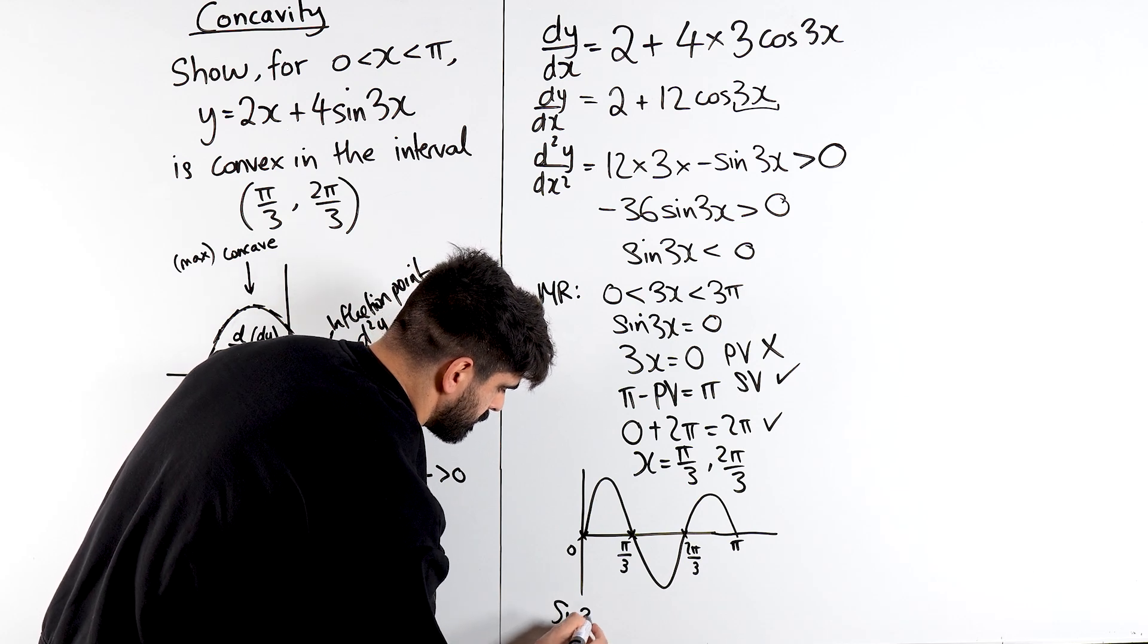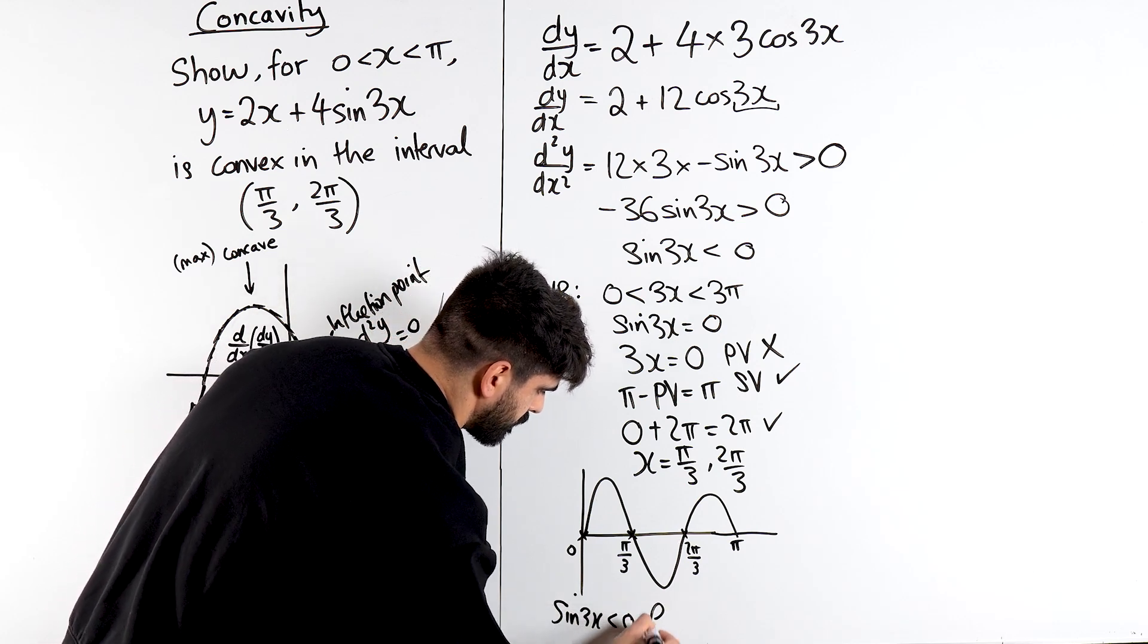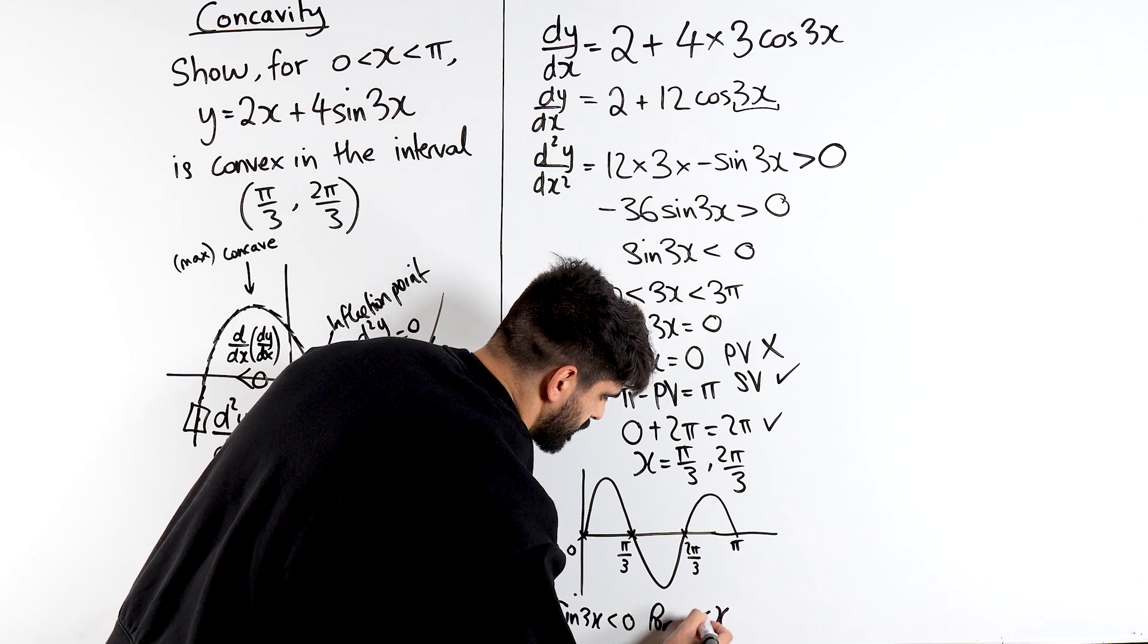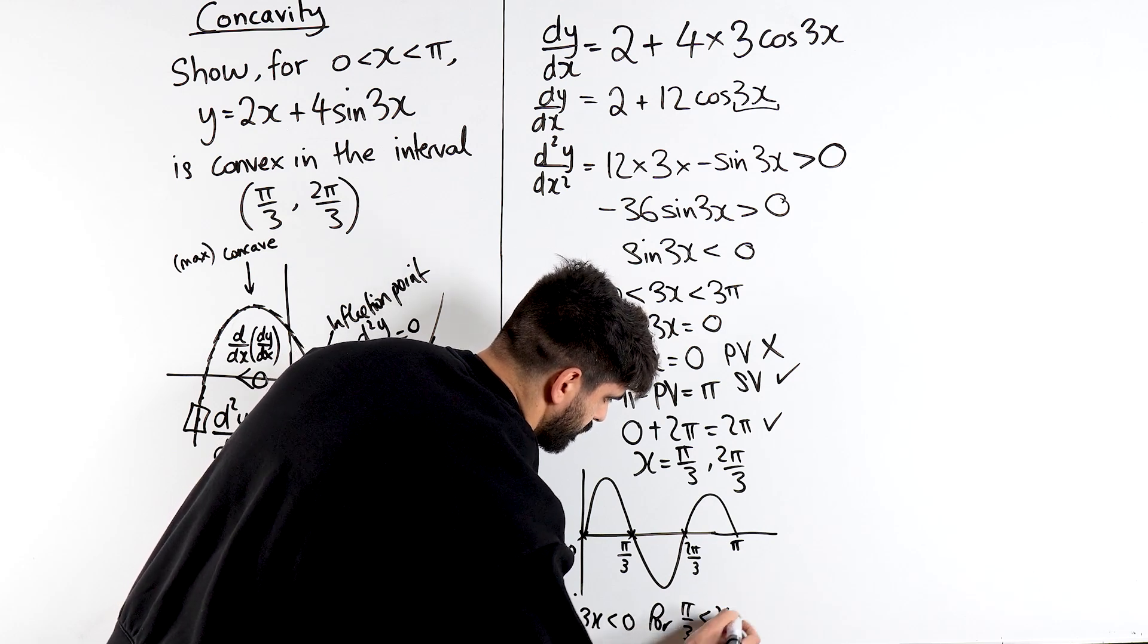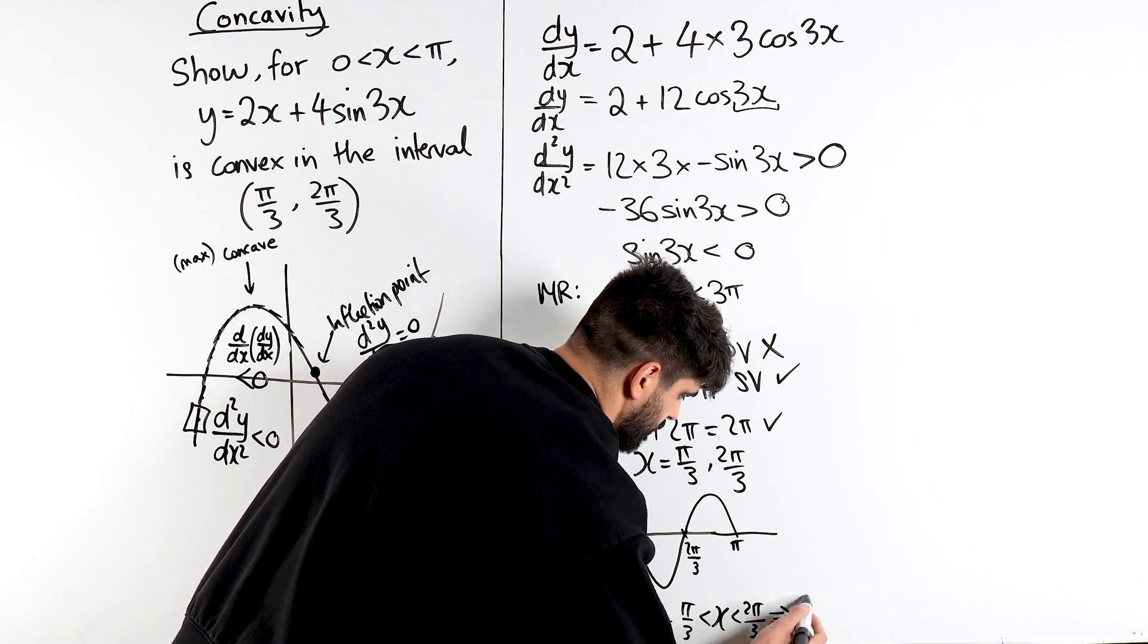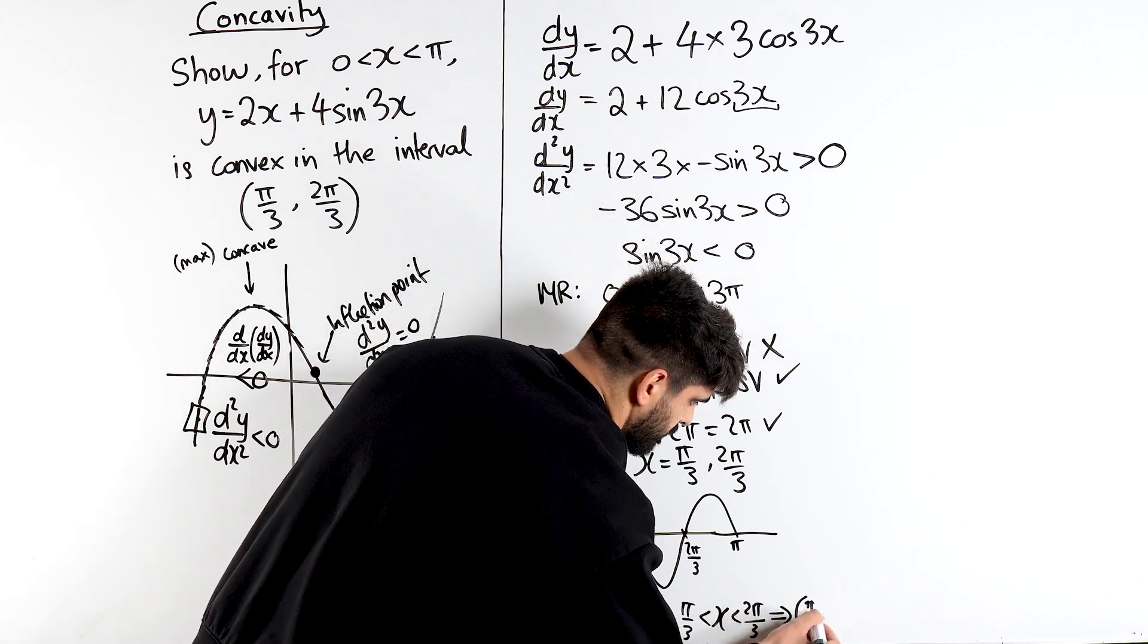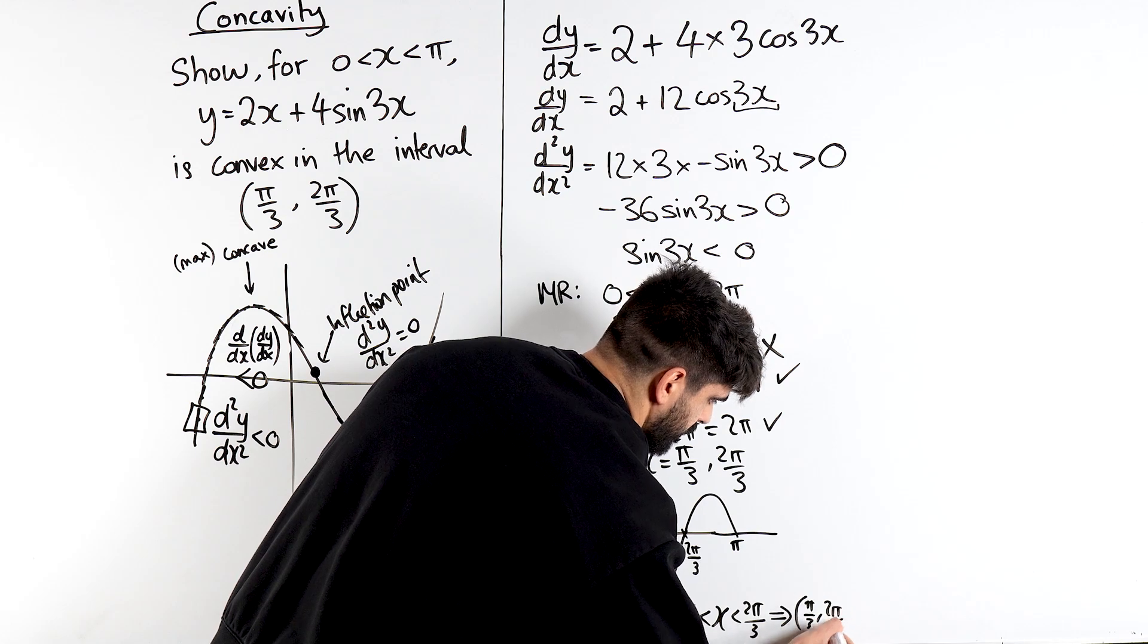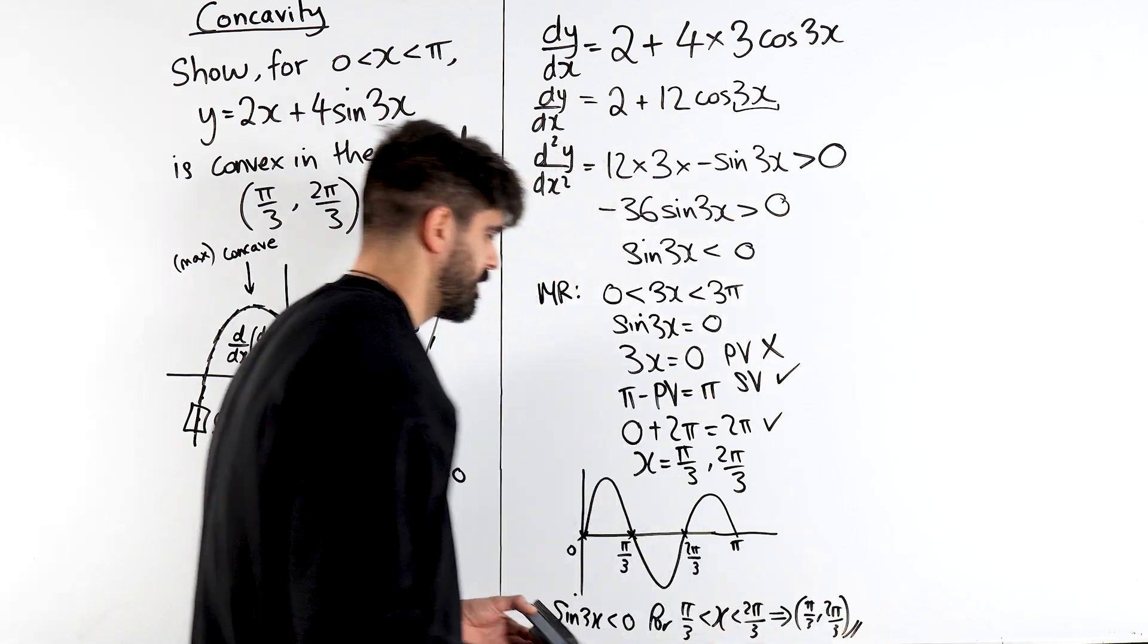So we're going to say, sin(3x) is less than 0 for x being between π/3 and 2π/3, which implies the region is π/3 and 2π/3. And that is that.